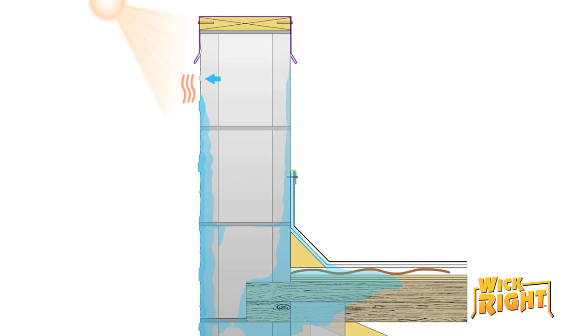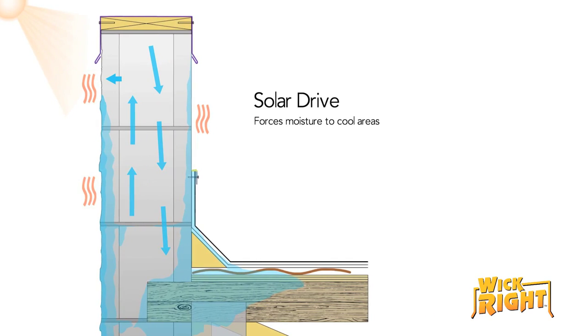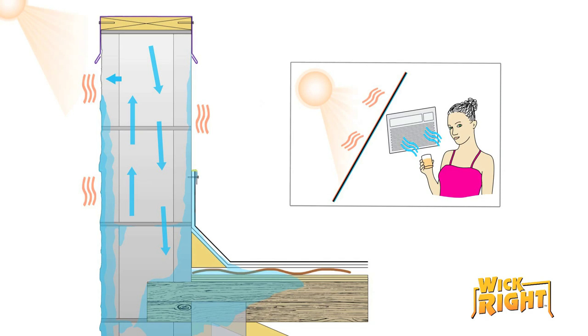During hot, humid summers, some moisture evaporates through the exterior of the wall, but most is trapped in the block's hollow core or migrates toward the interior of the building. Basic physics and a phenomenon known as solar drive forces moisture to travel from hot areas to cool areas, like the air-conditioned building interior.